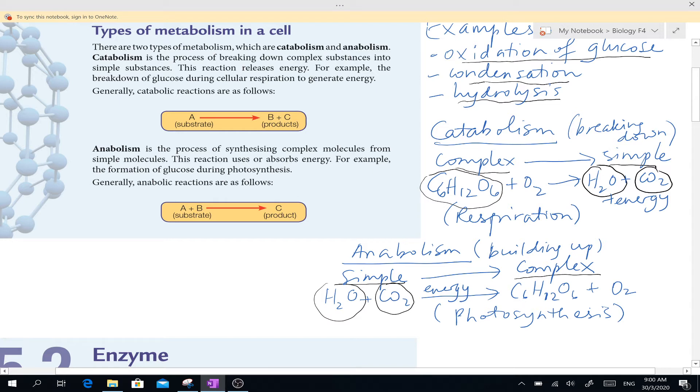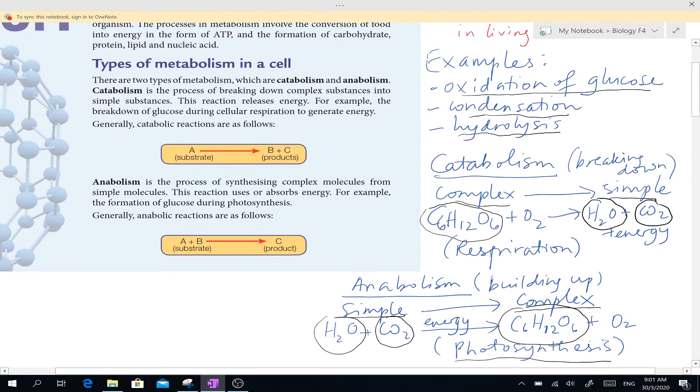Water reacts with carbon dioxide. Remember what is this? This is actually the reaction to form glucose. So photosynthesis. Photosynthesis is an anabolic reaction whereby simpler substances are formed into more complicated ones, this is glucose. You can see that the explanation here is in the textbook.